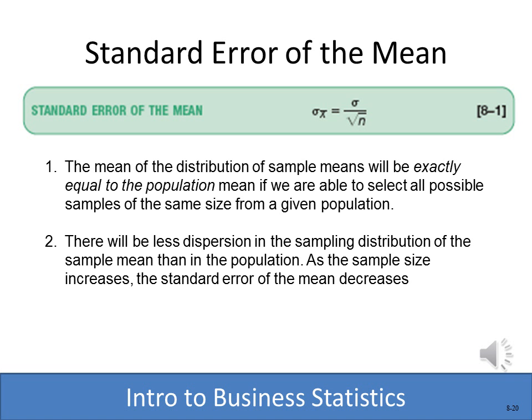Another formula we're introducing is the standard error of the mean. It's based on the concept that the larger your sample size, the smaller the difference between the population mean and the sample mean. The formula is: the standard error (standard deviation of the sample mean) = σ (population standard deviation) ÷ √n (square root of sample size).